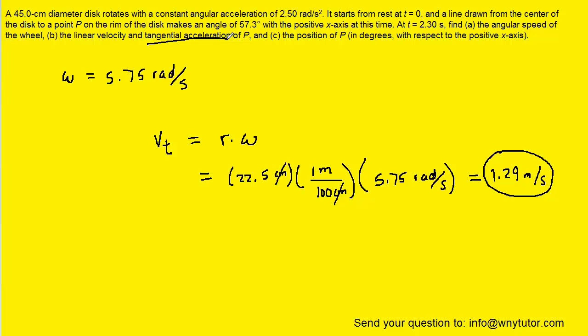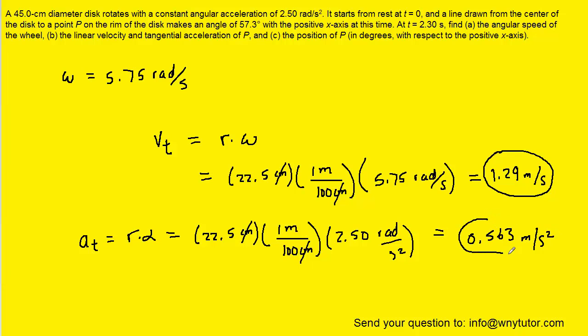Part B also wants us to find the tangential acceleration. Now tangential acceleration, which we can symbolize as a_t, is equal to the radius times the angular acceleration. We'll set up the radius in the same way that we did for the tangential velocity. And then we'll multiply by the angular acceleration, which was given to us in the question as 2.50 radians per second squared. And that works out to be roughly 0.563 meters per second squared. So this is the other part of the correct answer to B.